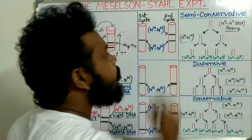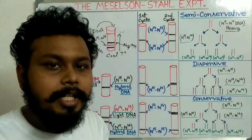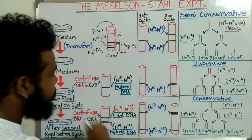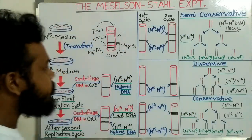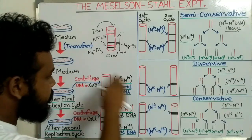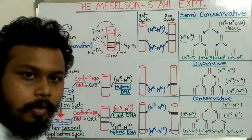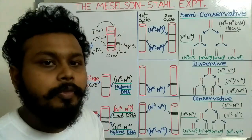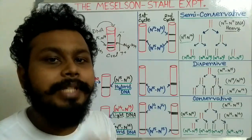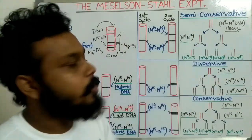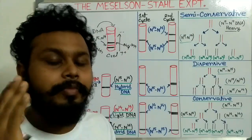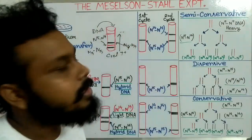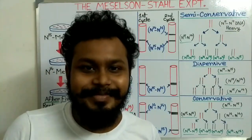Ultimately, Meselson and Stahl showed proof that the semi-conservative model is the correct model for DNA replication, because its expected result is the same as the observed result. This is the main experiment to prove the correct model of DNA replication — the semi-conservative model, as proved by Meselson and Stahl. Thank you for watching this video.